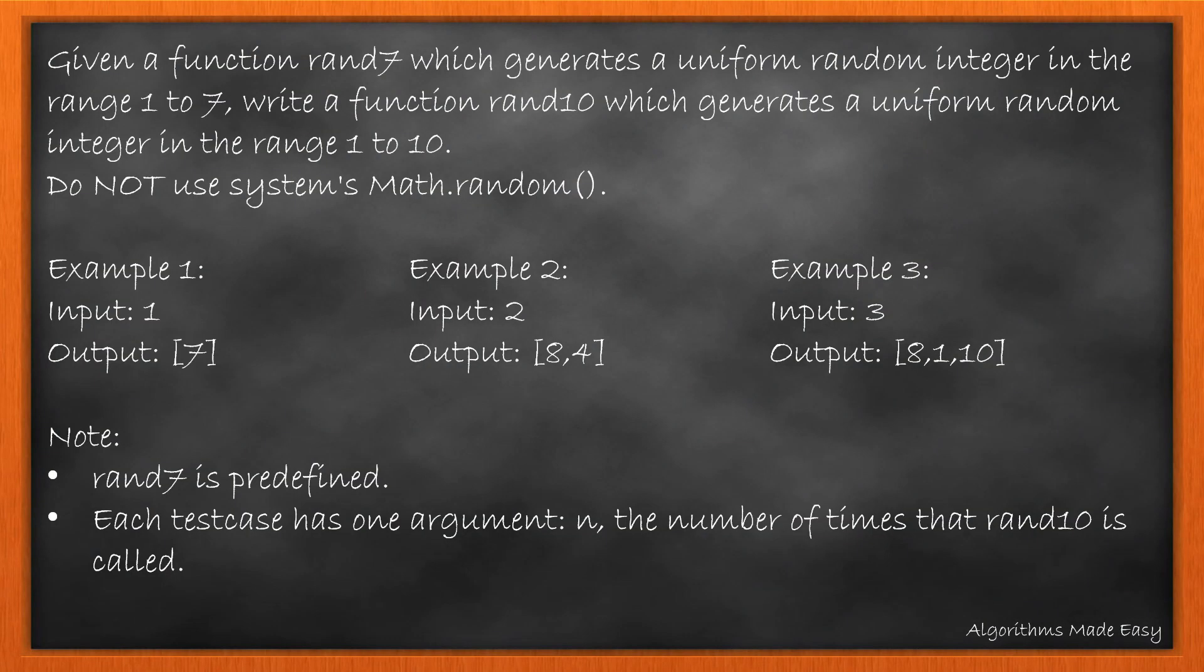Given a function which generates a uniform random integer in the range 1 to 7, write a function which generates a uniform random integer in range 1 to 10. It is specifically mentioned do not use system's Math.random function.